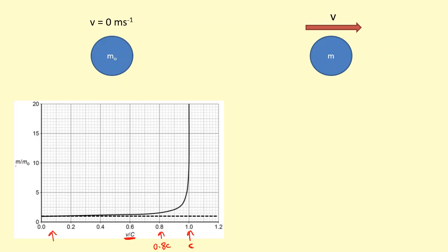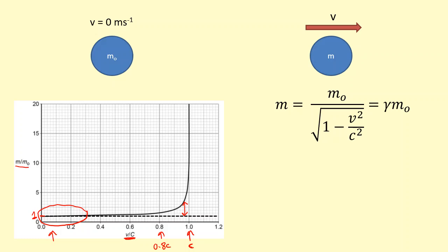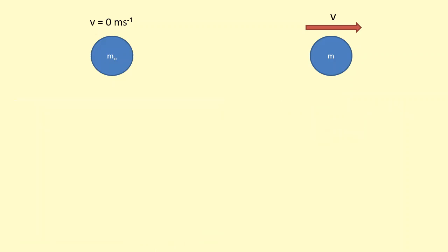On the y-axis we have mass in multiples of the rest mass, so a value of one means just the rest mass. You can see that at very low speeds, in this region here, the mass is basically the rest mass, so we don't need to worry about special relativity. At very low speeds we can use Newtonian mechanics. However, at higher velocities — above about 0.7 times the speed of light — you need to start considering special relativity. The equation for mass is the rest mass multiplied by the Lorentz factor.